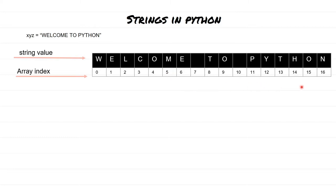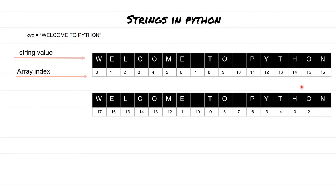Let's understand negative slicing. If you want to traverse this string in a negative way, you can do that. Whatever the string value is, you can take minus one as the last character, minus two as the second last character, minus three as the third last character, and so on. When performing a slicing operation, if you slice by minus one or minus two you are going to get values associated with those array indices.